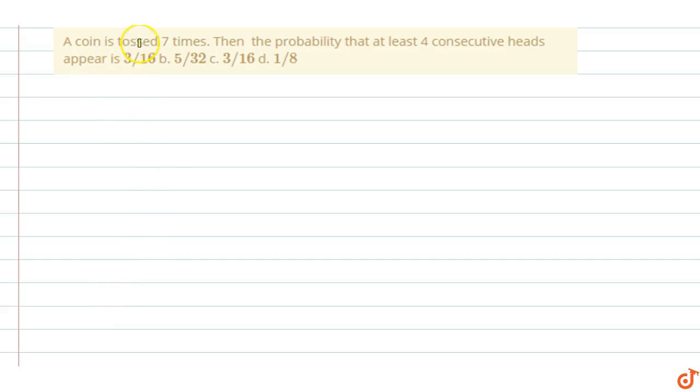In this question, a coin is tossed 7 times. Then the probability that at least 4 consecutive heads appears. Let's suppose probability of head is equal to 1/2 and probability of tail is 1/2.